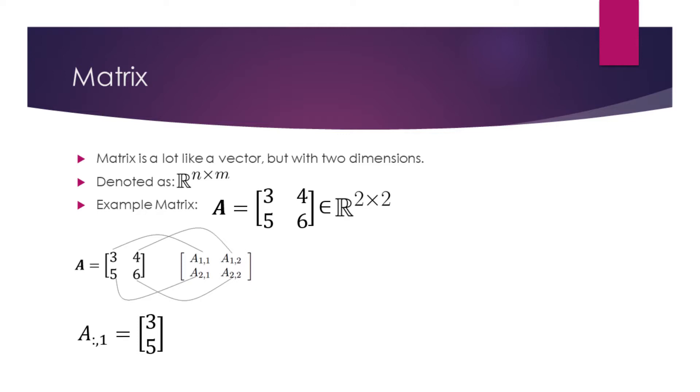Identifying individual elements of the matrix is similar to that of a vector, but we have to use two indices since matrix has two dimensions. For example, A with a subscript 1, 1 corresponds to 3. Similarly, A with a subscript 1, 2 is 4.